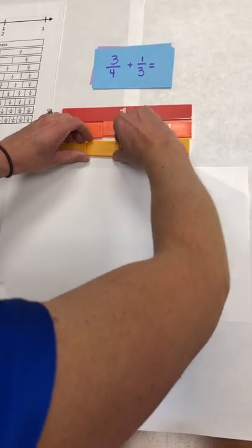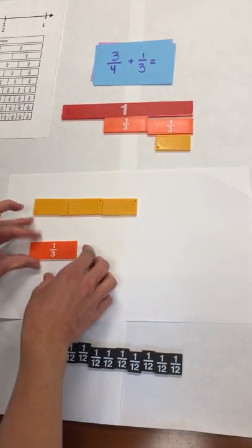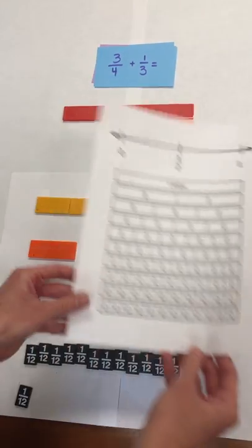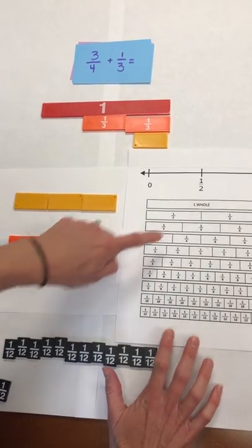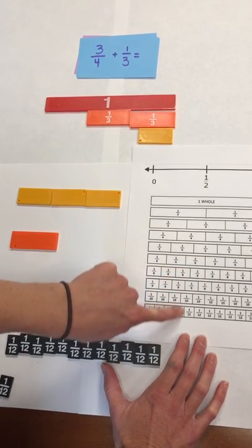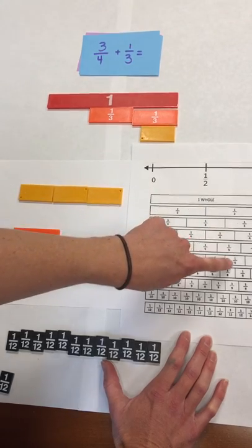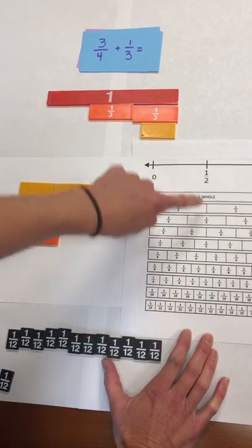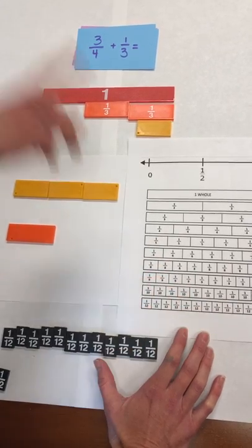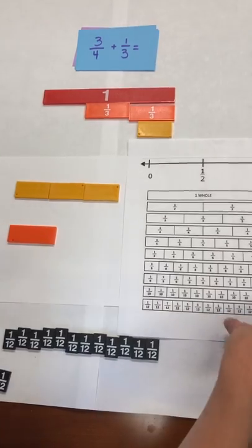Just think about how you can stretch that representation. Let's show three-fourths. We'll show one-third and we need to think about a common denominator. If I look at thirds, I know a common denominator will be sixths, ninths, and twelfths. If I look at fourths, I know a common denominator would only be twelfths. So twelfths were in common with thirds and fourths.